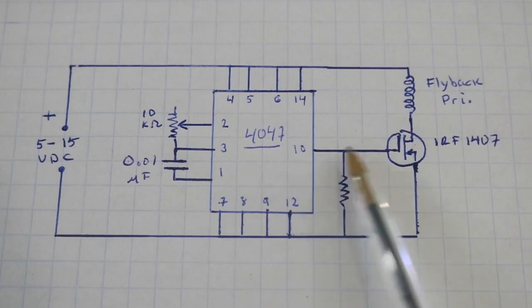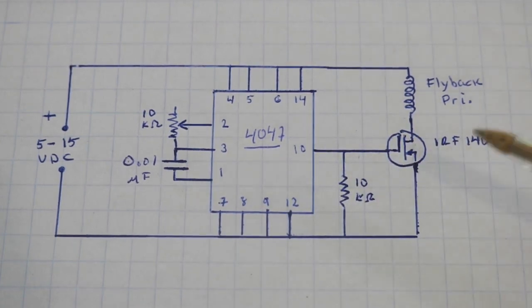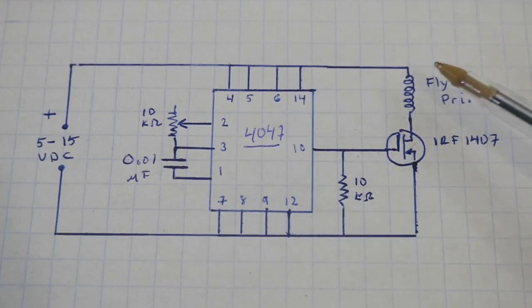Here we have the train of pulses that go to the gate of a MOSFET transistor. I am using the IRF1407, but you can use any power MOSFET. The MOSFET makes the final switching of the flyback primary.